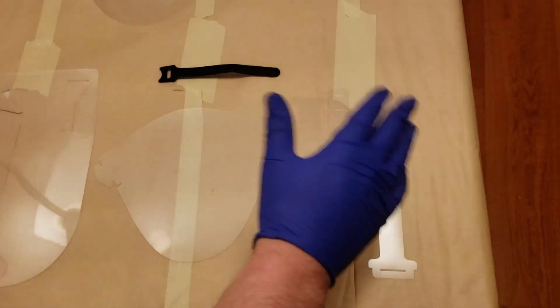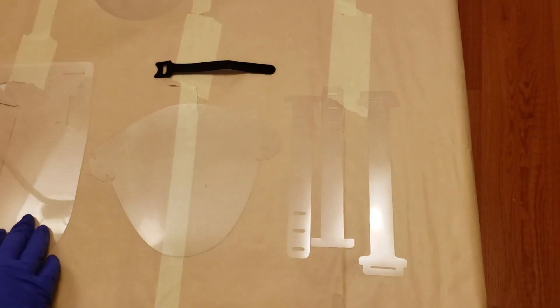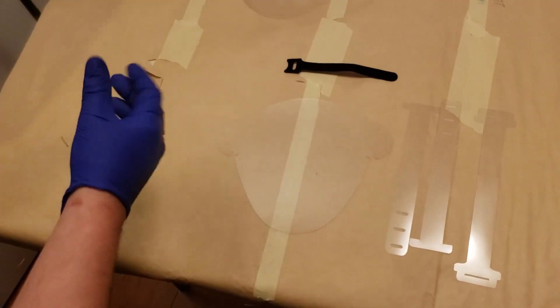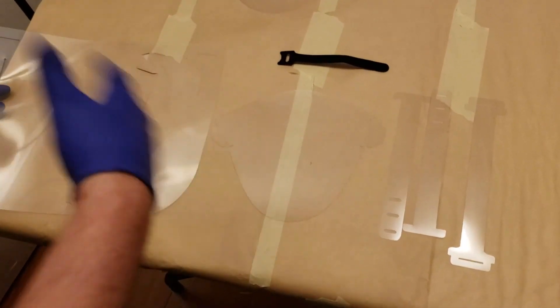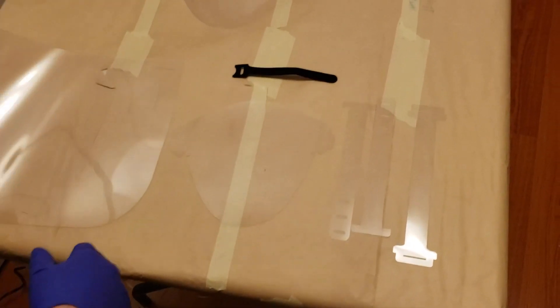The front head strap is a double duty. It's a head strap and it also keeps the shield from getting too close to your face, which is super important so it doesn't fog.